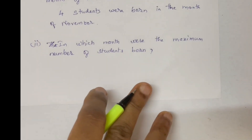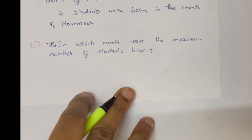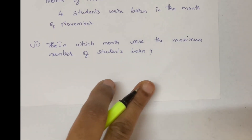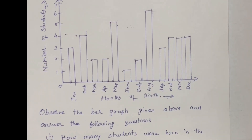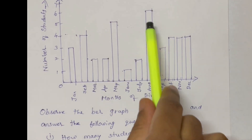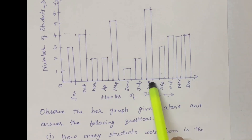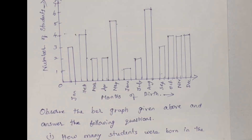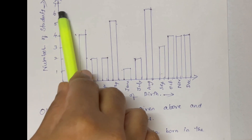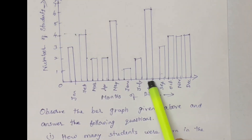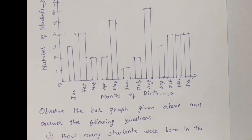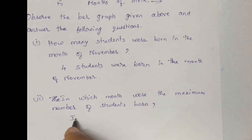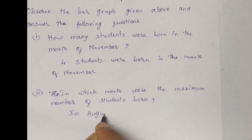In the month of November, 6 students were born. The maximum number of students — 6 students — were born in August.